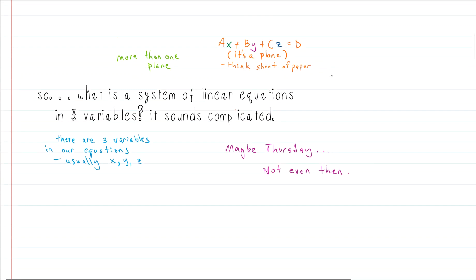So what exactly is a system of linear equations in three variables? It sounds kind of complicated, but good thing for us, it isn't super complicated. Let's break it down. The three-variable part just means we have equations that have three variables — we usually have an x, a y, and a z.